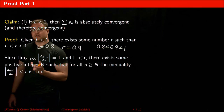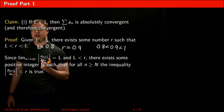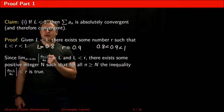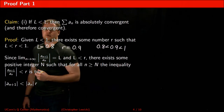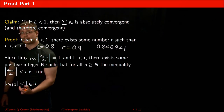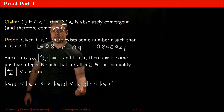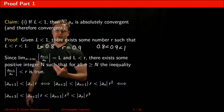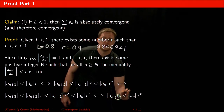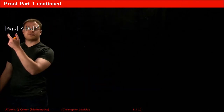Since the limit as n goes to infinity is L, and L is less than r, then after a certain term it must be true that this ratio is less than r, just like L is less than r. Multiplying both sides of this inequality by a(n) shows that a certain term in the series is less than the previous term multiplied by r. We can repeat this: each term is less than the previous term times r, and we can repeat this pattern indefinitely.